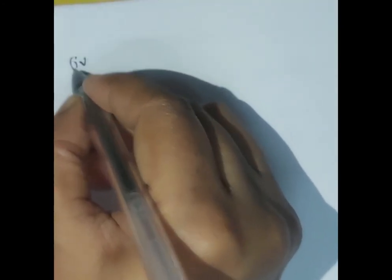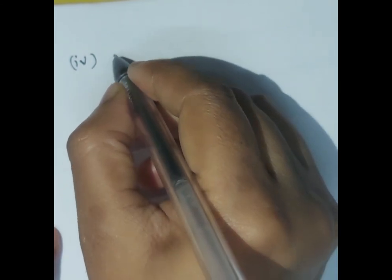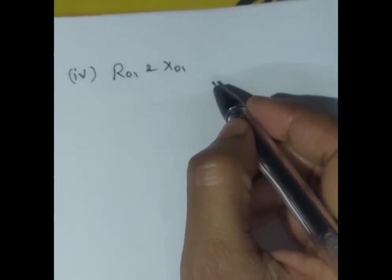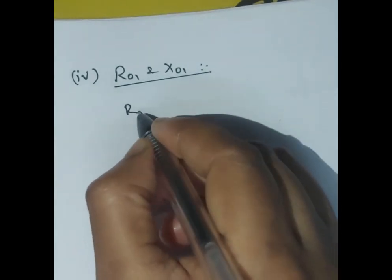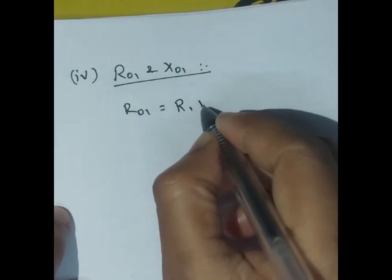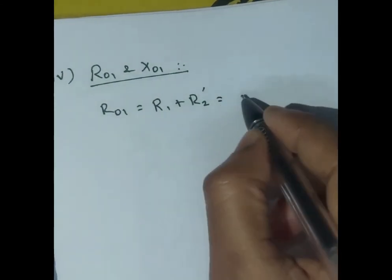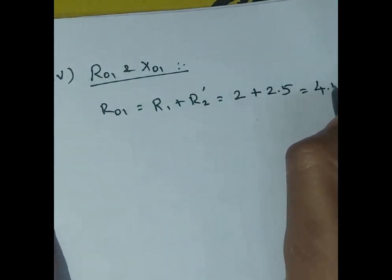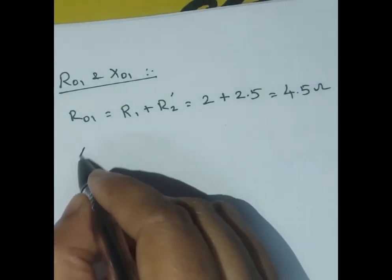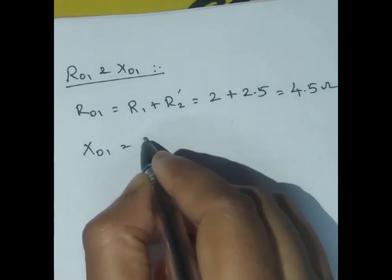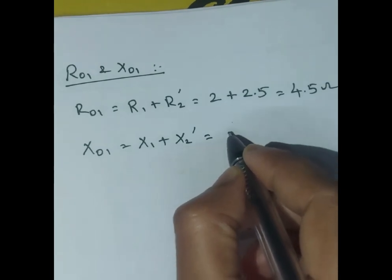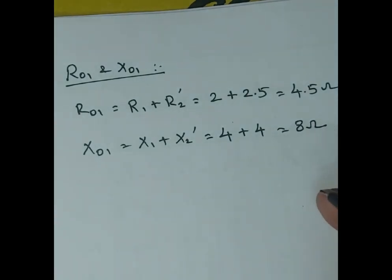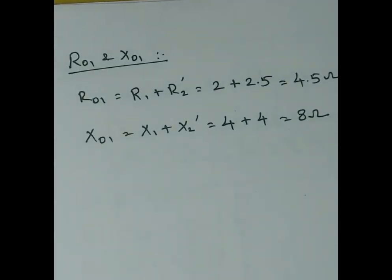For Case 4, we find R01 and X01, the total resistance and reactance referred to primary. Since it is referred to primary, the primary value is as-is and R2' is added. So R01 = R1 + R2' = 2 + 2.5 = 4.5 ohm. Then X01 = X1 + X2' = 4 + 4 = 8 ohm. Like this we calculate the equivalent impedances. Thank you all.